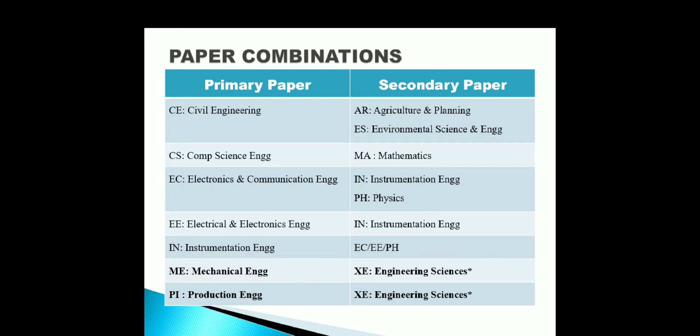Regarding paper combinations, if you look at this slide: for Civil Engineering, your secondary paper can be Agriculture and Planning or Environmental Science Engineering. For Computer Science, the secondary paper option is Mathematics. For Mechanical Engineering, Engineering Sciences is the option.